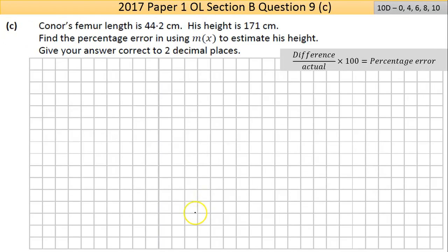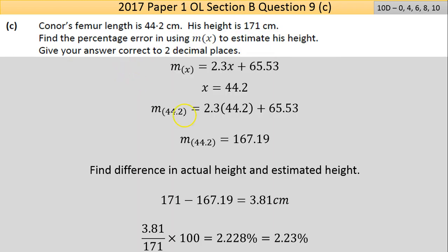Part C says Conor's femur length is 44.2 centimeters, his height is 171 centimeters. Find the percentage error in using m(x) to estimate his height. Using the function with his femur length, we calculate the estimated height. We're then told his actual height is 171 centimeters, so there is a discrepancy of 3.81 centimeters.